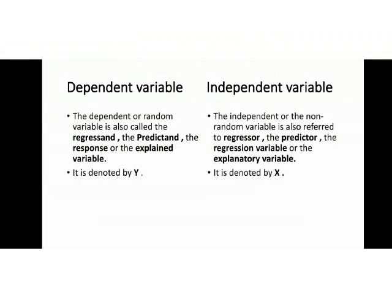Dependent variable and independent variable. The dependent or random variable is also called the regressand, the predictand, the response or the explained variable. It is denoted by Y. Independent variable: The independent or the non-random variable is also referred to regressor, the predictor, the regression variable or the explanatory variable. It is denoted by X.